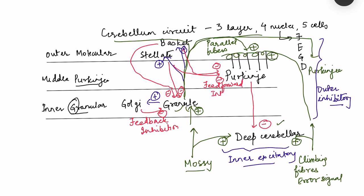Feed-forward inhibition occurs because: initially, via mossy fibers → granule cells, the Purkinje cells are excited. But then basket and stellate cells inhibit the Purkinje cells. Because of this connection, we get the damping action of the cerebellum — the movement is initiated but dampened within a short period of time.